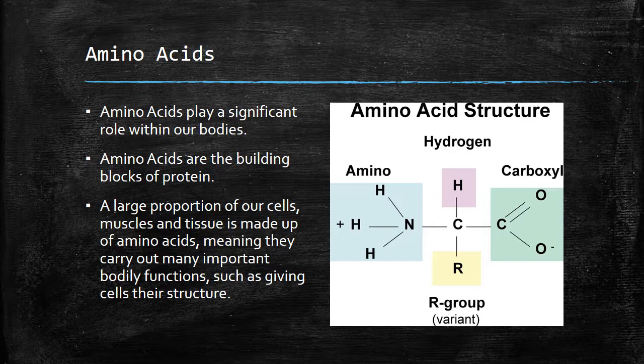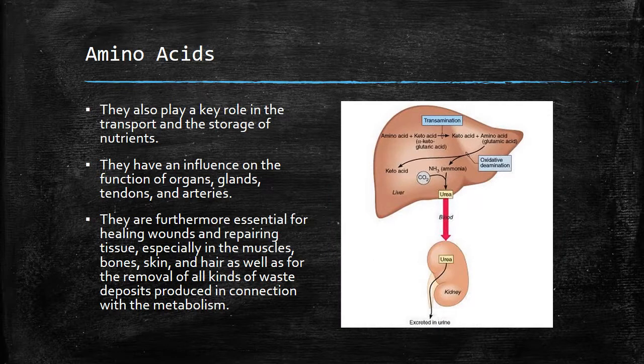Amino acids play a significant role within our bodies. Amino acids are the building blocks of protein. A large proportion of our cells, muscles, and tissues are made up of amino acids, meaning they carry out many important bodily functions such as giving cell structure. They also play a key role in the transport and storage of nutrients, and they have an influence on the function of organs, glands, tendons, and arteries.